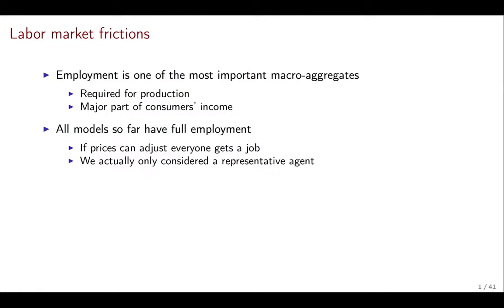We have only considered representative agent models, so not only does everybody have a job, but all the agents in the economy are the same. And that is clearly not true. We do observe unemployment. We do observe people who want to work and cannot. And we do observe differences across people in whether or not they can get a job. So what we want to do now is to change the type of framework and model we use to be able to talk about this.